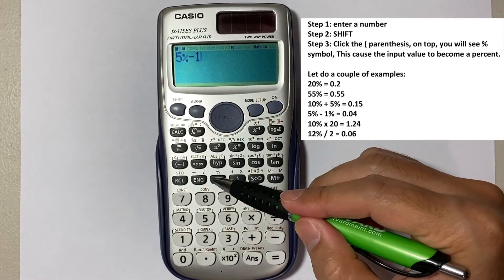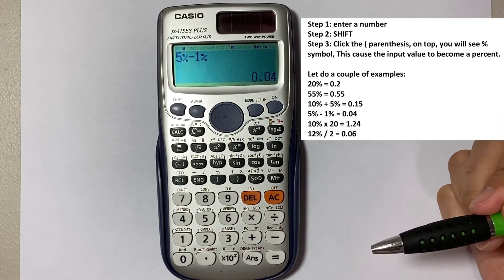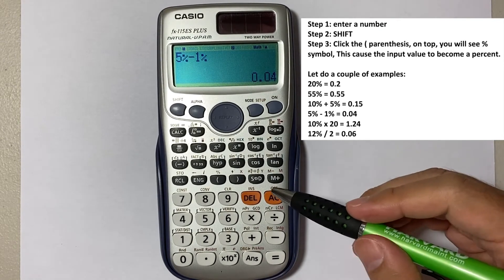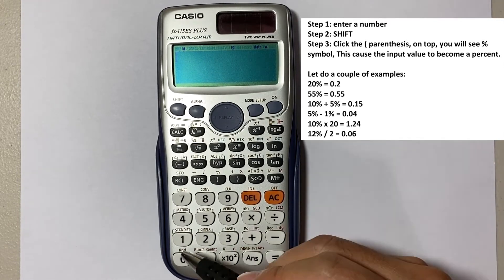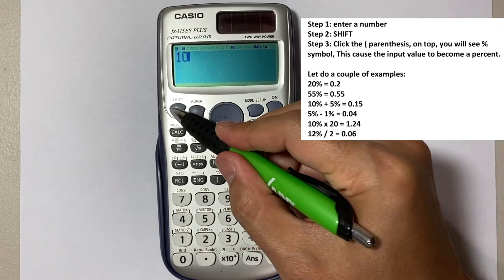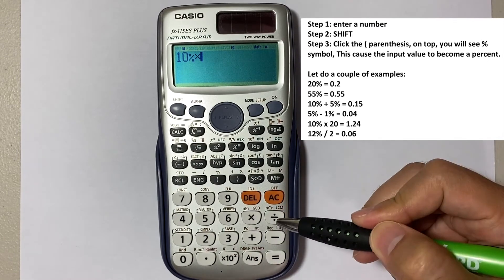How about doing some multiplication here? Let's say if you have 10 percent multiply by 20, that will give you 2.